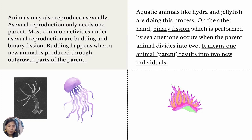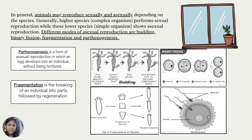One parent animal divides into two new individuals. In general, animals may reproduce sexually or asexually depending on the species. Higher or more complex organisms perform sexual reproduction, while lower or simpler organisms show asexual reproduction. Different modes of asexual reproduction include budding, binary fission, fragmentation, and parthenogenesis. Parthenogenesis is a form of asexual reproduction in which an egg develops into an individual without being fertilized. Fragmentation is the breaking of an individual into parts followed by regeneration.